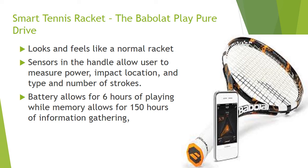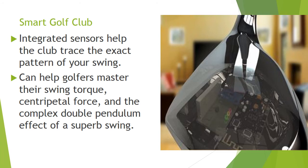Here we have some smart sports coverage. This is the Babolat Play Pure Drive — a smart tennis racket. It looks and feels just like a normal racket, except it has sensors in the handle that allow the user to measure many aspects of their tennis performance, such as power, impact location and type, and number of strokes. The battery allows up to six hours of play, while the memory can hold 150 hours of information. We also have a smart golf club with sensors integrated into it to trace the exact pattern of your swing and help golfers master their swing torque and general performance.